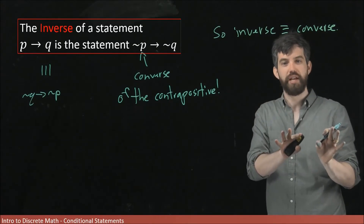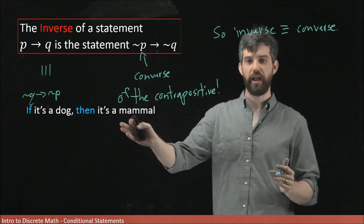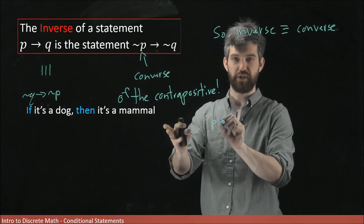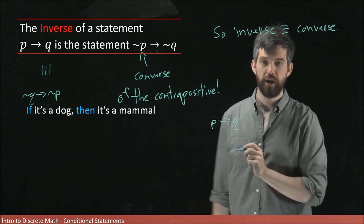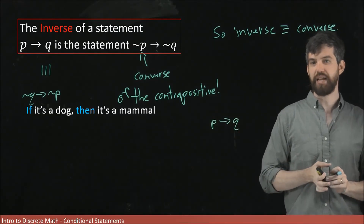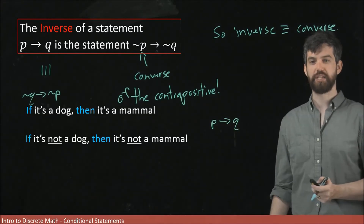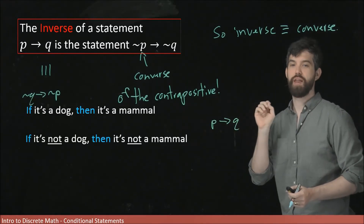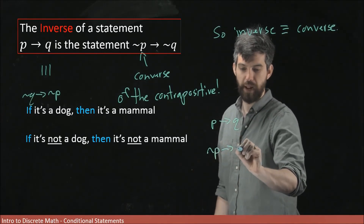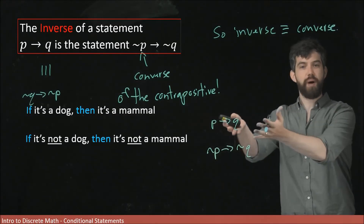Returning to our familiar example: if it's a dog, then it's a mammal — the form P implies Q, where P is 'it's a dog' and Q is 'it's a mammal.' The inverse of this statement says: if it's not a dog, then it's not a mammal. This has the structure not P implies not Q. Let's reason through this sentence.